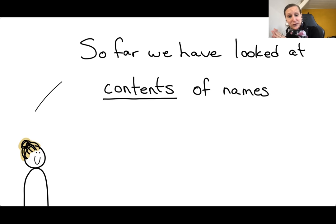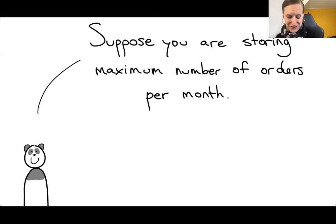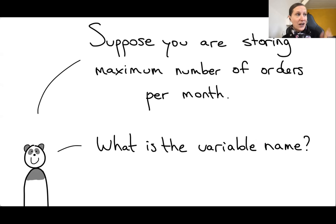I promise you two things, right? So far, we've looked at the content of names. What words, what are the meaning of words that we put into variable names? But shape, the form of the variable name also matters. It's not just about the words. One more panda, not for you. So I hope that you are still participating. Suppose we are storing the maximum number of orders in a month. What would be a good variable name? Just think about what variable name would you pick here?